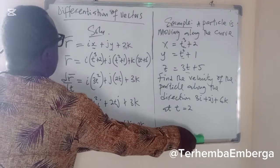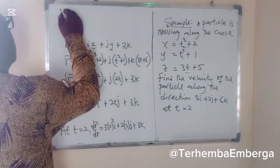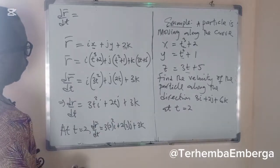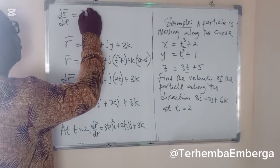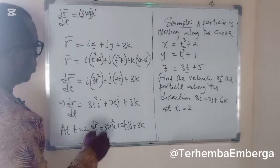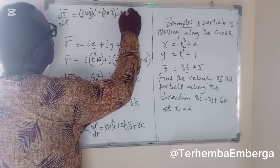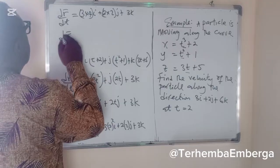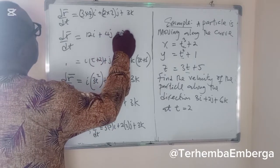So, by the time we evaluate this, we have dr/dt equal to, square of 2 is 4. Okay, let's break it down. So we have 3 times 4i plus 2 times 2j plus 3k. And it becomes dr/dt equal to 12i plus 4j plus 3k.